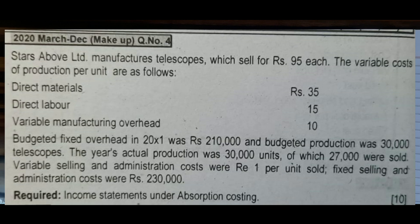Now let's see the fixed cost. The budgeted fixed overhead is Rs.2,10,000. The budgeted production was 30,000 units. The actual production for the year was 30,000 units, of which 27,000 units were sold.